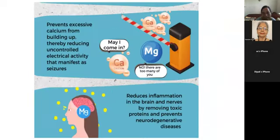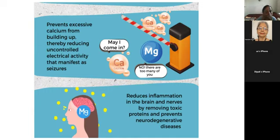Magnesium also prevents excessive calcium from building up and reduces inflammation in the brain, which plays a very important role in neurodegenerative diseases. This is especially common in the elderly population, in conditions like dementia, Alzheimer's disease, and Parkinson's disease.